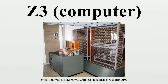Helmut Schreyer advised Zuse to use a different technology. As a doctoral student at the Berlin Institute of Technology in 1937, he worked on the implementation of Boolean operations and flip-flops on the basis of vacuum tubes. In 1938, Schreyer demonstrated a circuit on this basis to a small audience, and explained his vision of an electronic computing machine.